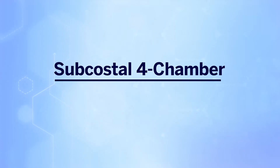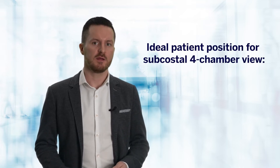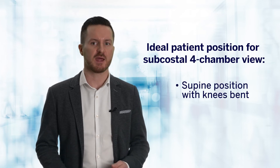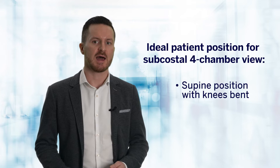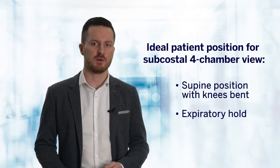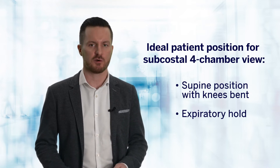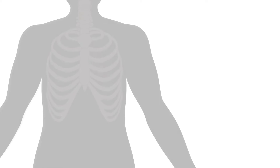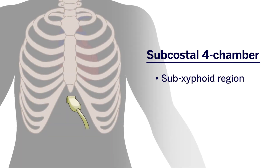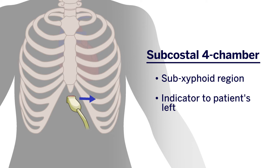Our next view is the subcostal four-chamber view. Obtaining this view can be uncomfortable for patients, and patient positioning is important for optimizing windows and image quality. Ideally, the patient should be in the supine position with the knees bent to relax the abdominal musculature, and if possible, an inspiratory hold can be useful for image optimization, as it serves to bring cardiac structures closer to the probe. The ultrasound probe is placed in the sub-xiphoid region with the probe indicator facing towards the patient's left side at approximately the three o'clock position, as indicated by the blue arrow in this diagram.